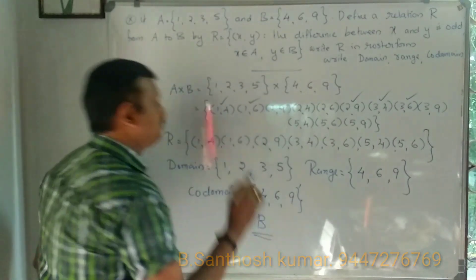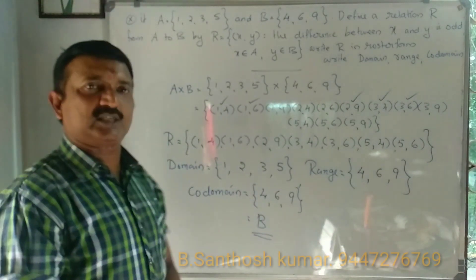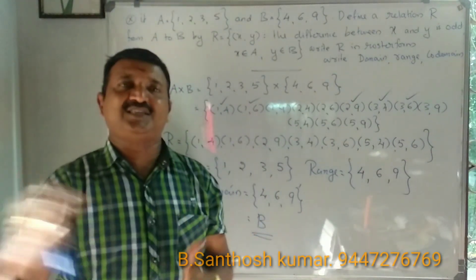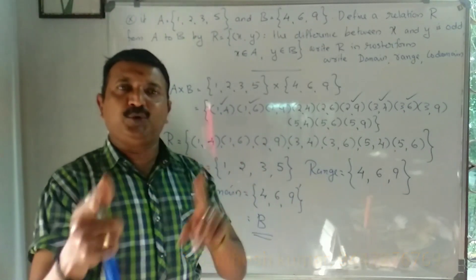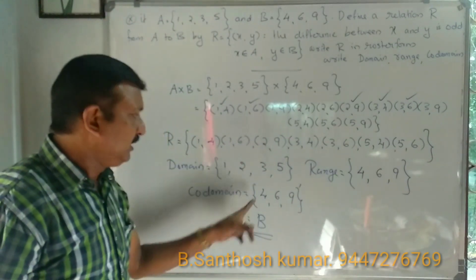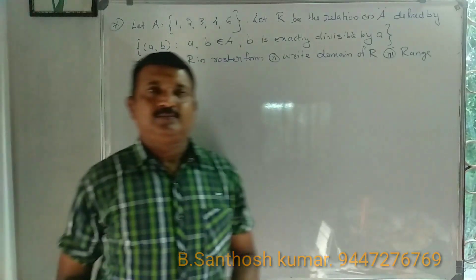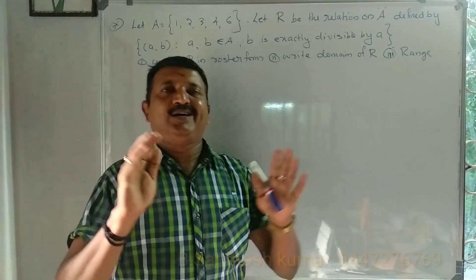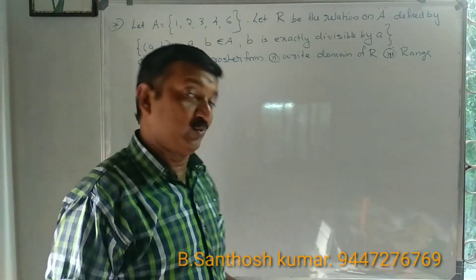The codomain means all elements of the second set B, which is {4, 6, 9}. The codomain is always the full second set, regardless of which elements are actually used in the relation.